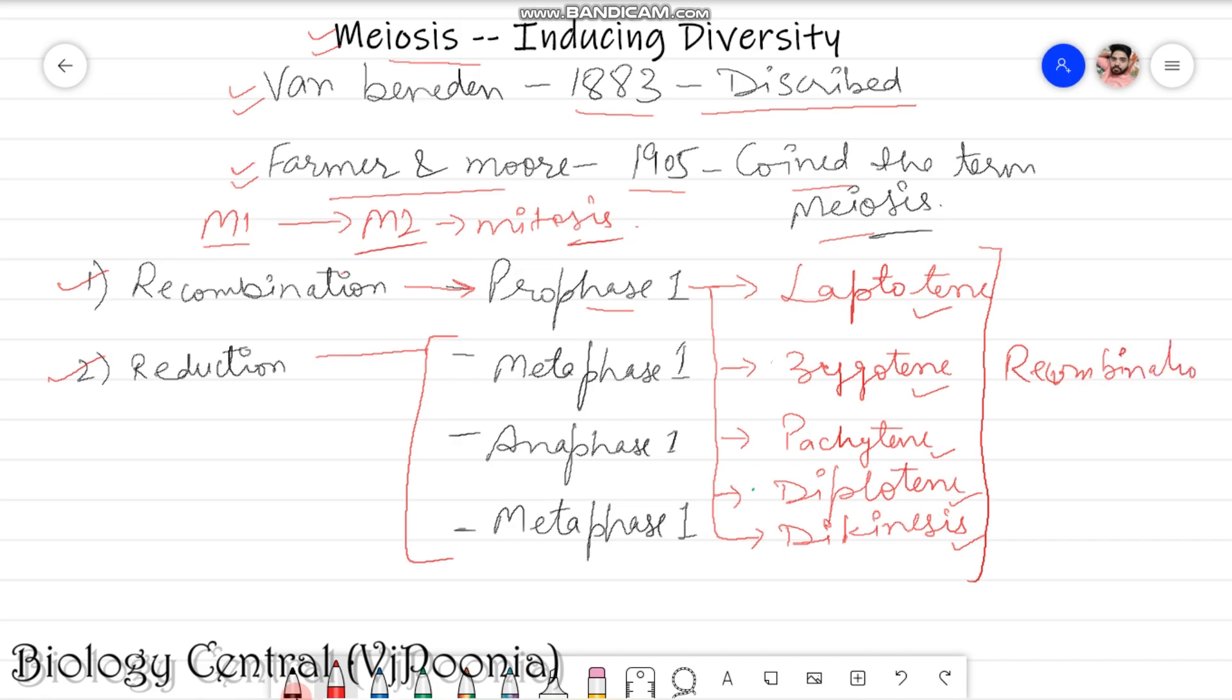What is recombination? Recombination is just exchange of genetic material onto the non-sister chromatid of homologous chromosome so that new combinations of characters, new combination of genes can be given. That's why meiosis is also known as diversity, it is inducing diversity.